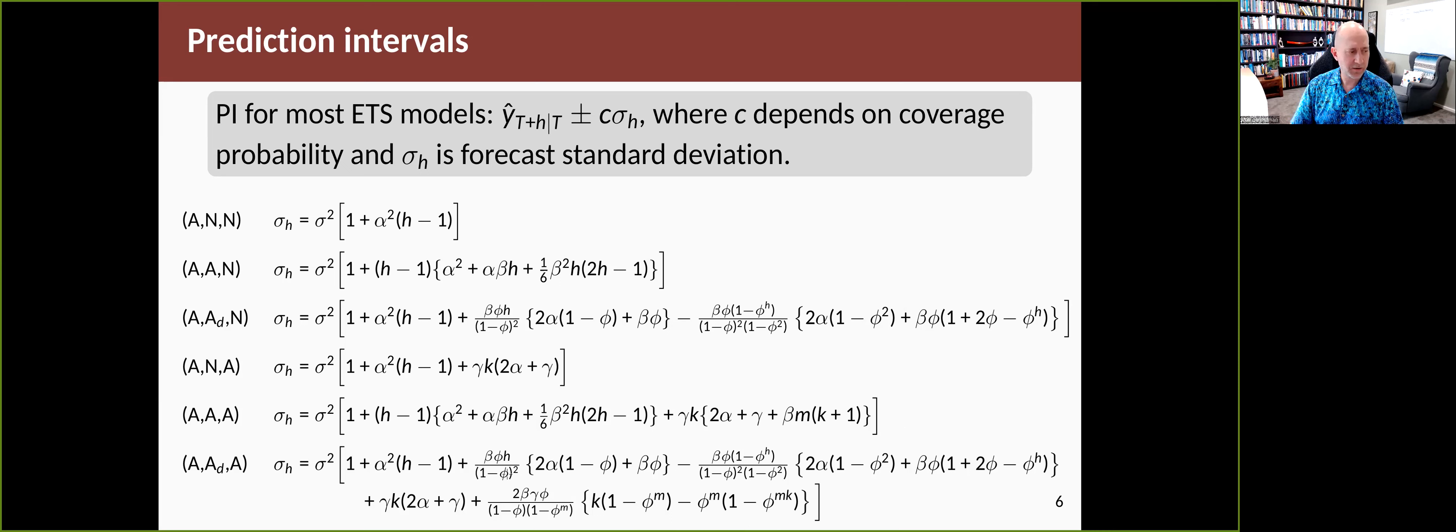As the model gets more complicated, the derivation gets more difficult and the expression gets more complicated. The most difficult one here is additive errors, damped additive trend, and additive seasonality—the one on the bottom. It's a little bit painful to actually try to compute, and I can assure you it was very painful to derive as well. This is why Fable can do the distributions quite quickly, because we have expressions like this for most of the models. Once we have the variance, we can use the normal distribution and plug it into a formula where C simply depends on what coverage we want.